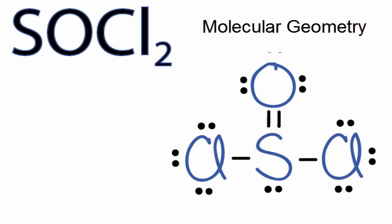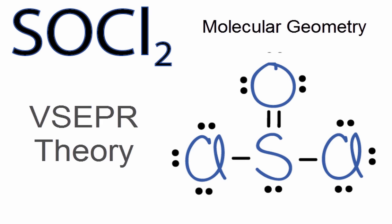And that gives us an idea of what the shape might be, because we can imagine those all spreading out as far away as possible from each other, and that gives us the molecular geometry in accordance with the valence-shell-electron-pair repulsion theory.